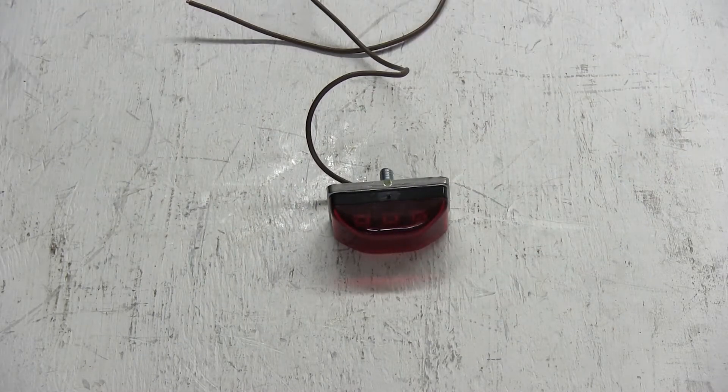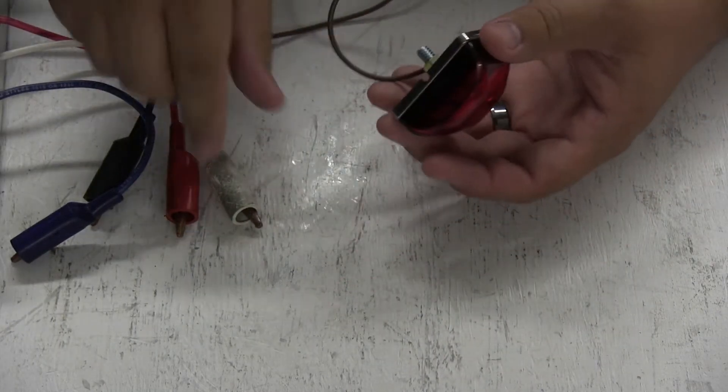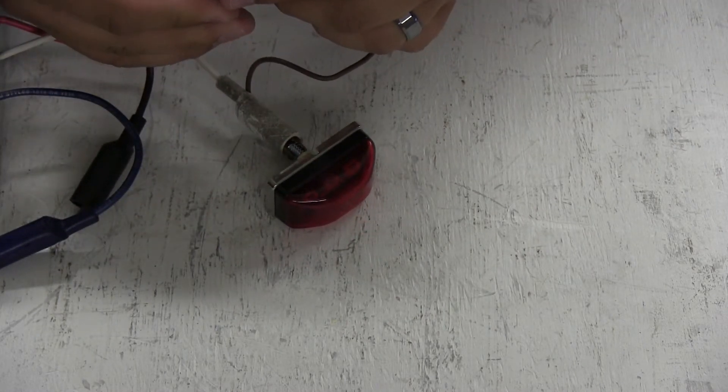Now we'll hook the light up to a power supply so you can see how it looks. We'll connect our ground to the mounting stud at the back and we'll connect our power to the loose wire lead.